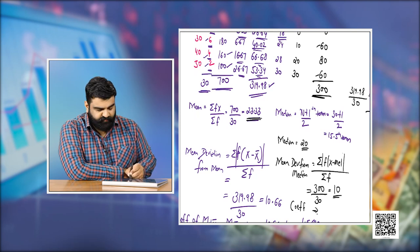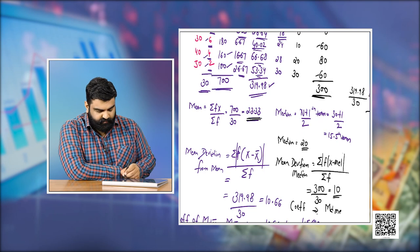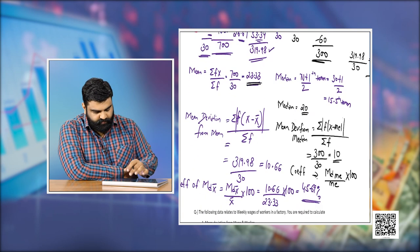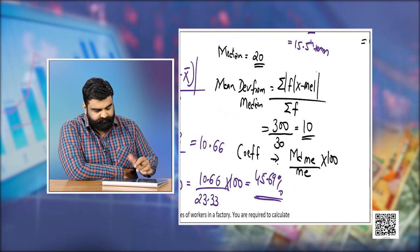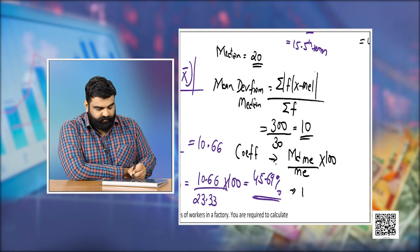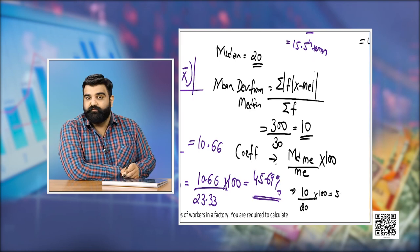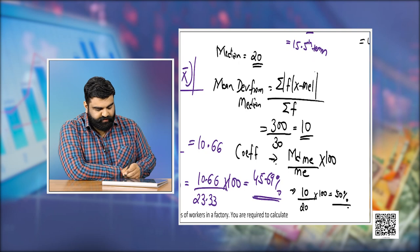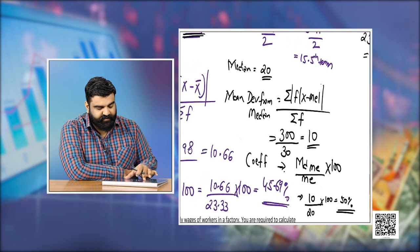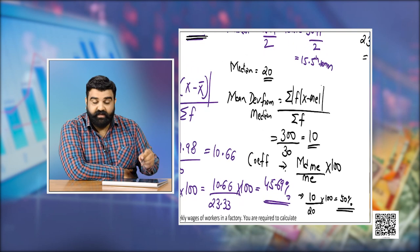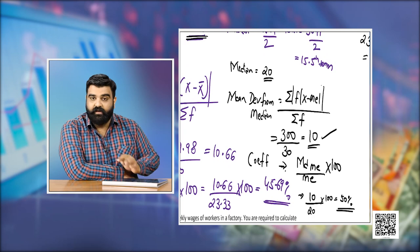The coefficient of mean deviation from median = mean deviation from median upon median into 100 = 10 upon 20 into 100 = 50 percent. So the coefficient is 50 percent and the mean deviation from median is 10.